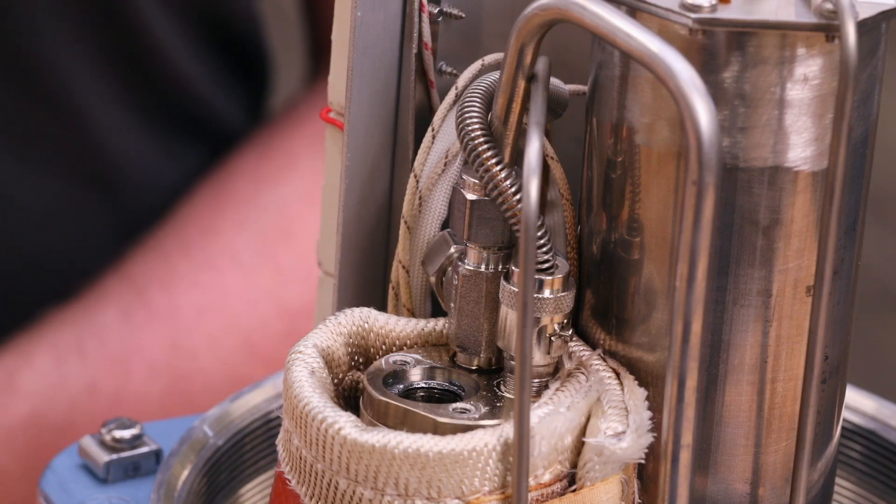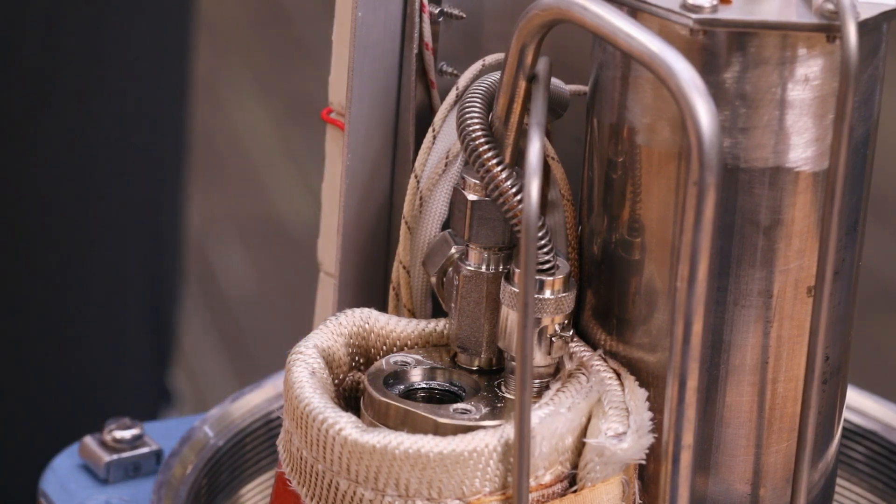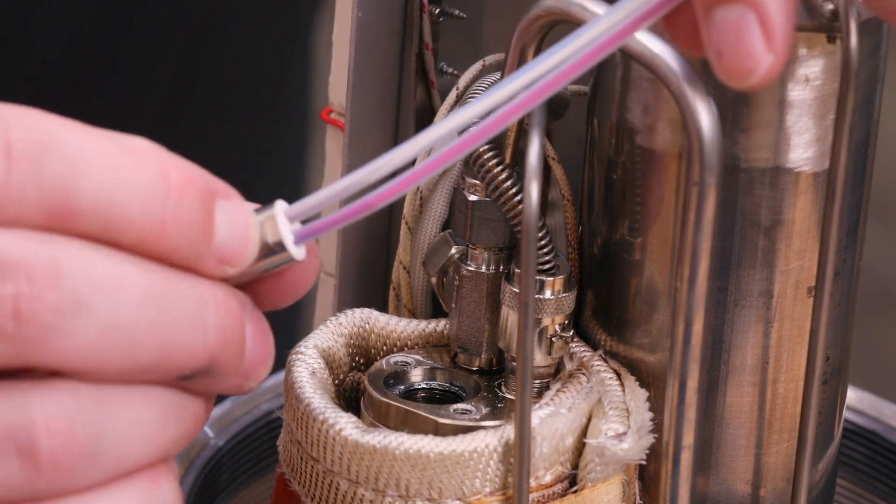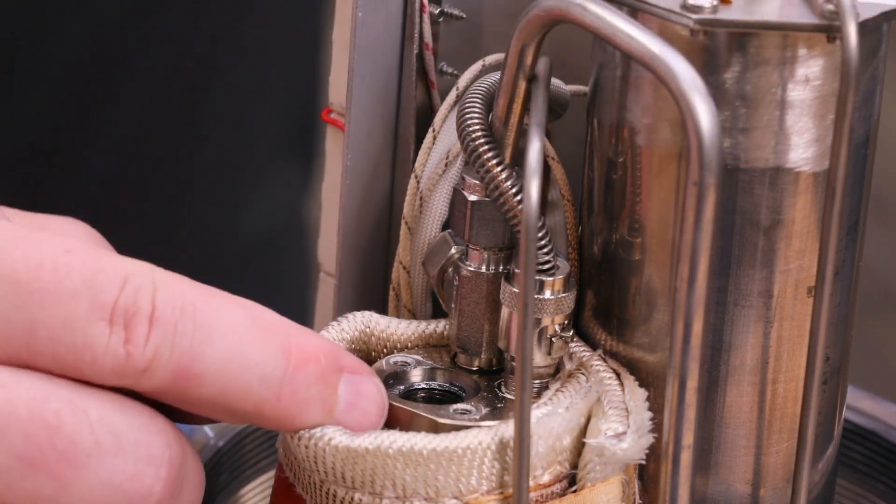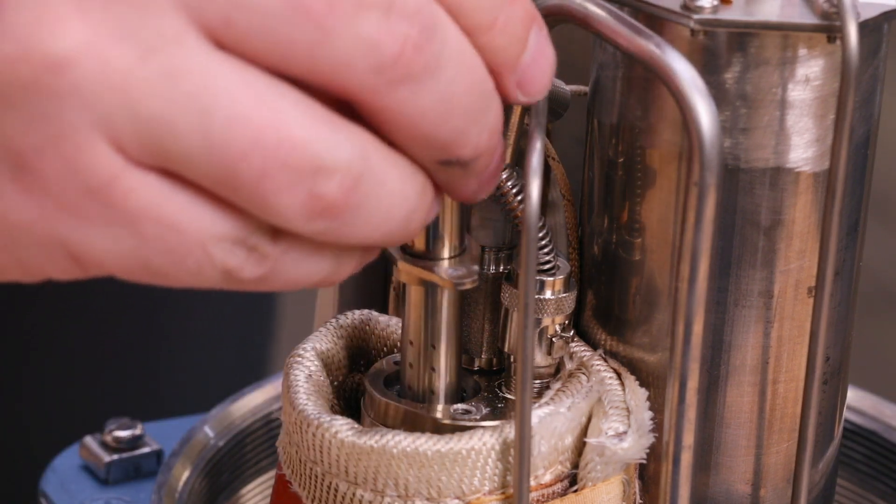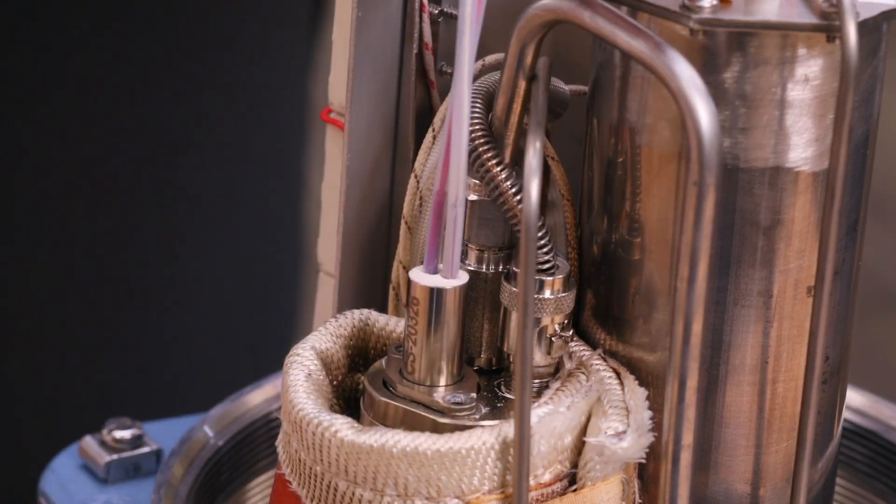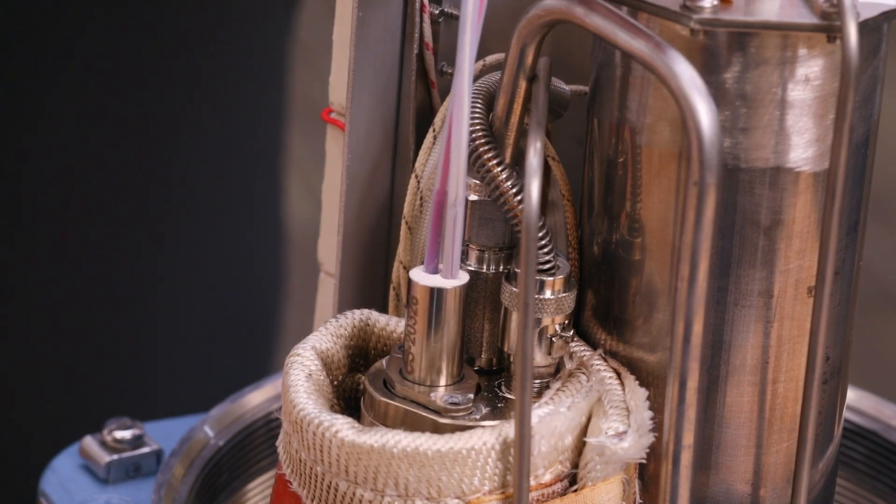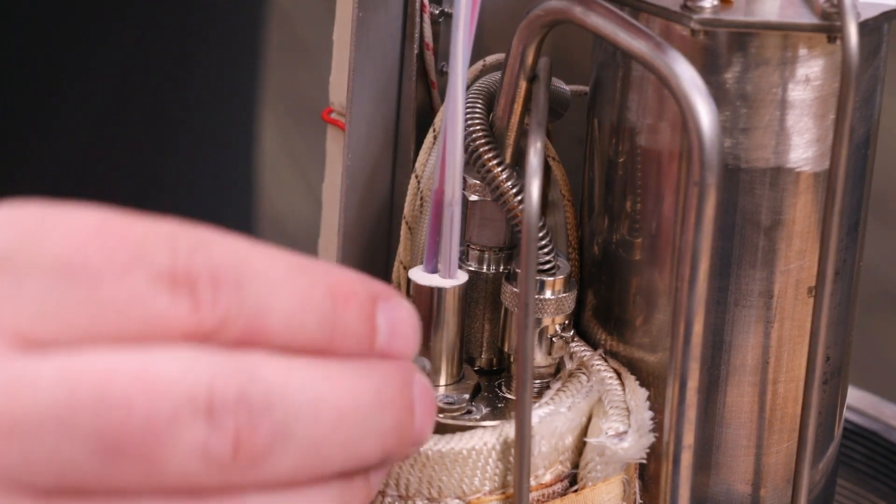Insert the new sensor into the sensor holder with the flat edge of the sensor facing away from the flat edge of the sensor holder. Insert the lock washers and screws and tighten the screws until they are finger tight.